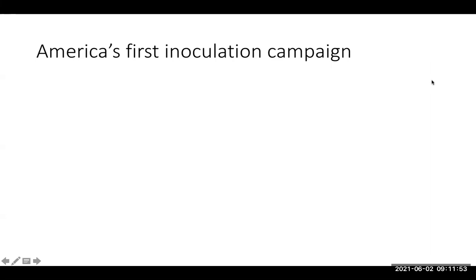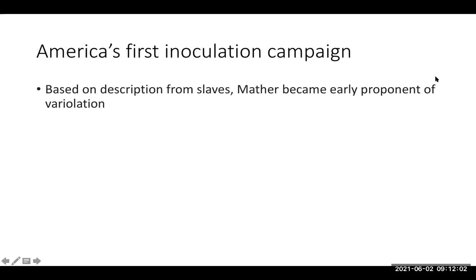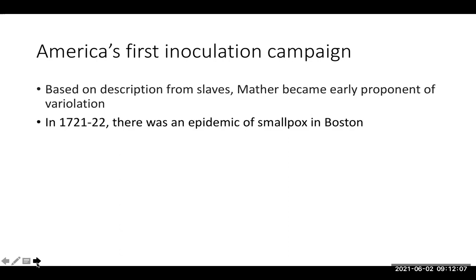The history of Onesimus is a little bit lost afterwards. He multiple times tried to buy his freedom and was finally granted it in 1716. Based on that information and other information from enslaved Africans, there began the first inoculation campaign in the U.S. Mather became a big proponent of variolation. In the 1720s there was a big outbreak of smallpox in Boston. Smallpox mortality is approximately 30%, so obviously it's a quite dangerous disease. Mather wrote to several doctors in Boston, but only one doctor, Dr. Boylston, agreed to help out with inoculation.